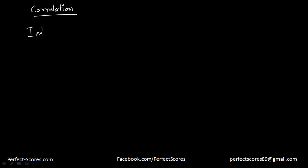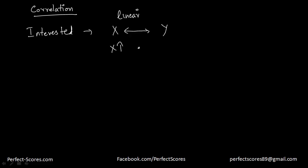So what exactly is correlation — why do you learn it and what is the meaning of correlation? Well, let's suppose you are interested in finding out the dependency of two variables. Let's say I have a variable X and a variable Y. I want to see if there is any kind of linear relationship between X and Y — meaning if X increases, what happens to Y. Does Y increase all the time? Does Y decrease all the time? Or is there an unpredictable effect that I cannot predict?